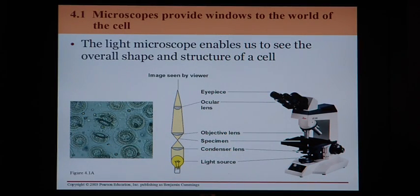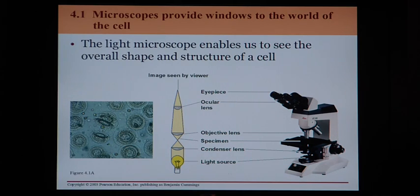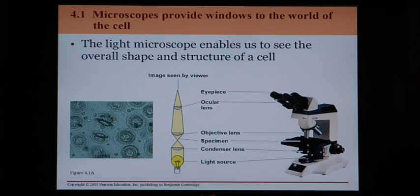We began understanding more about the cell when we had our first microscope. One of the most basic microscopes we have now — the kind you'll be using in lab — is the light microscope, which enables us to see the overall shape and structure of a cell. This type of microscope works by passing light through a specimen like bacteria or tissue. Since passing light through a living thing is not harmful, we are able to look at living cells and sometimes even see them move and carry out functions under the microscope.